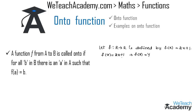Let y equal 2x plus 1. Transferring plus 1 to the left hand side, we get 2x equals y minus 1. By transferring 2 to the right hand side, we get x equals y minus 1 divided by 2.